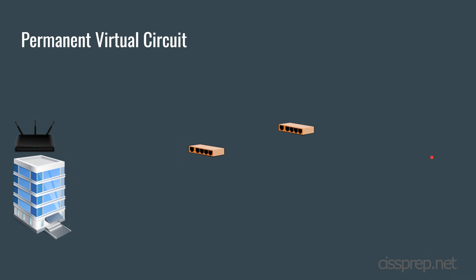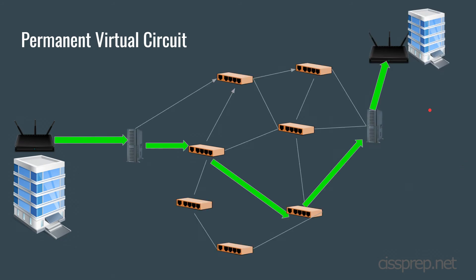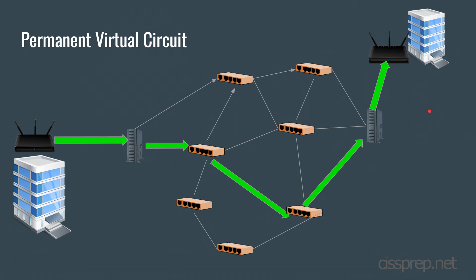With a permanent virtual circuit, resources are set aside and configured for the sole use of the customer who purchases it. This is useful when a high volume and continuous flow of data is needed. The customer isn't aware and doesn't need to know the configuration of the circuit — it's simply a service that is provided to the customer.